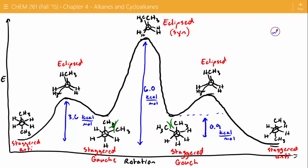Because the eclipsed syn is so high in energy, it takes a lot of energy to get past that barrier, but it can still be overcome at room temperature. What would happen if we had two tert-butyl groups instead of methyl groups? It's going to have an even harder time getting past one another. The less stable it is, the more energy is required to reach that unstable state.